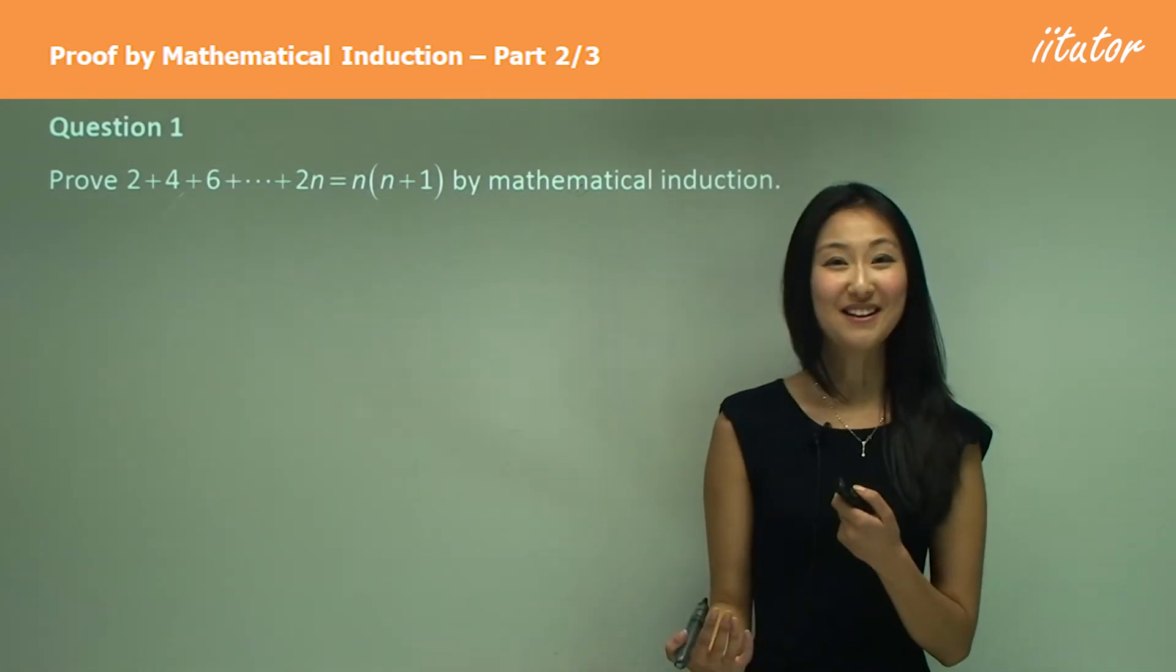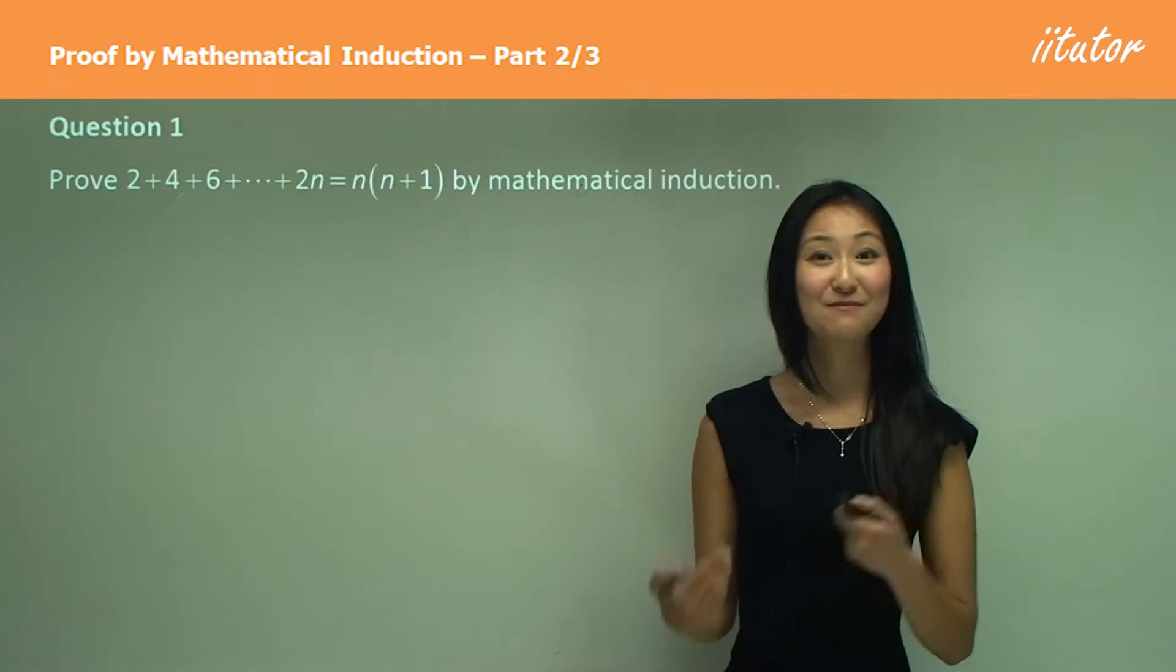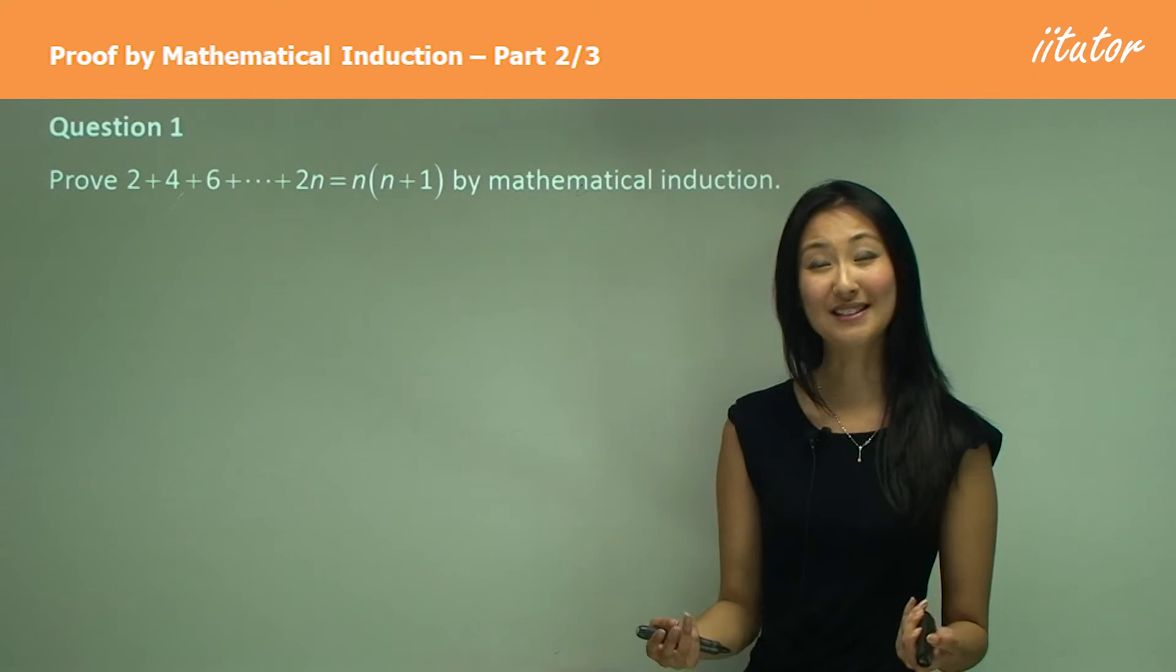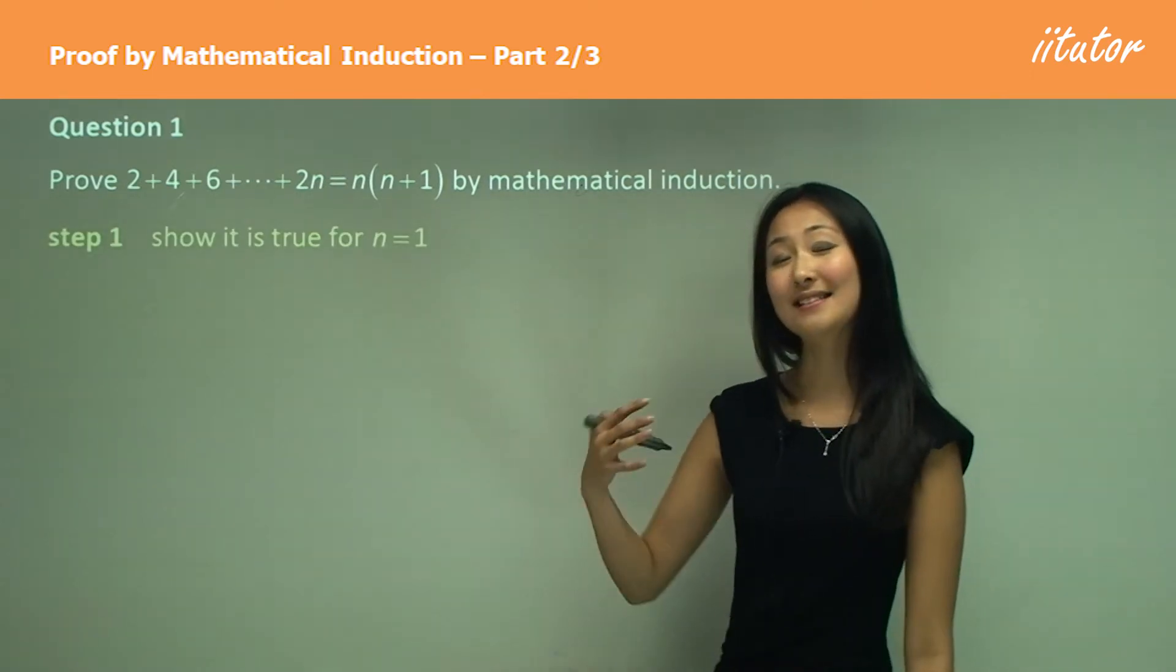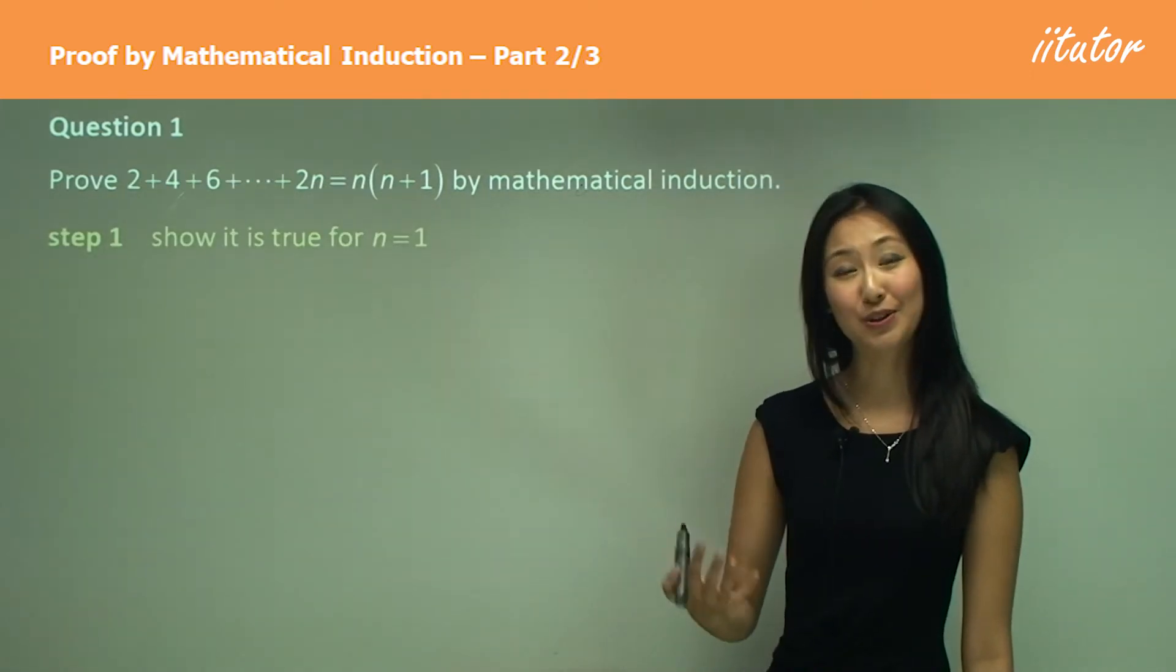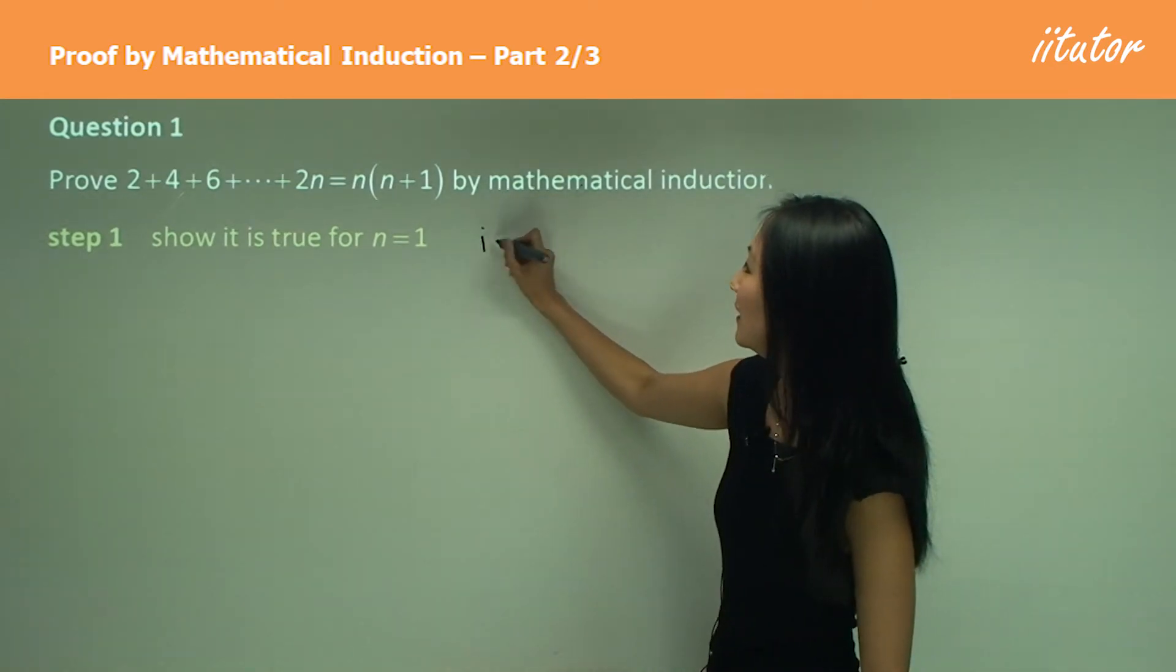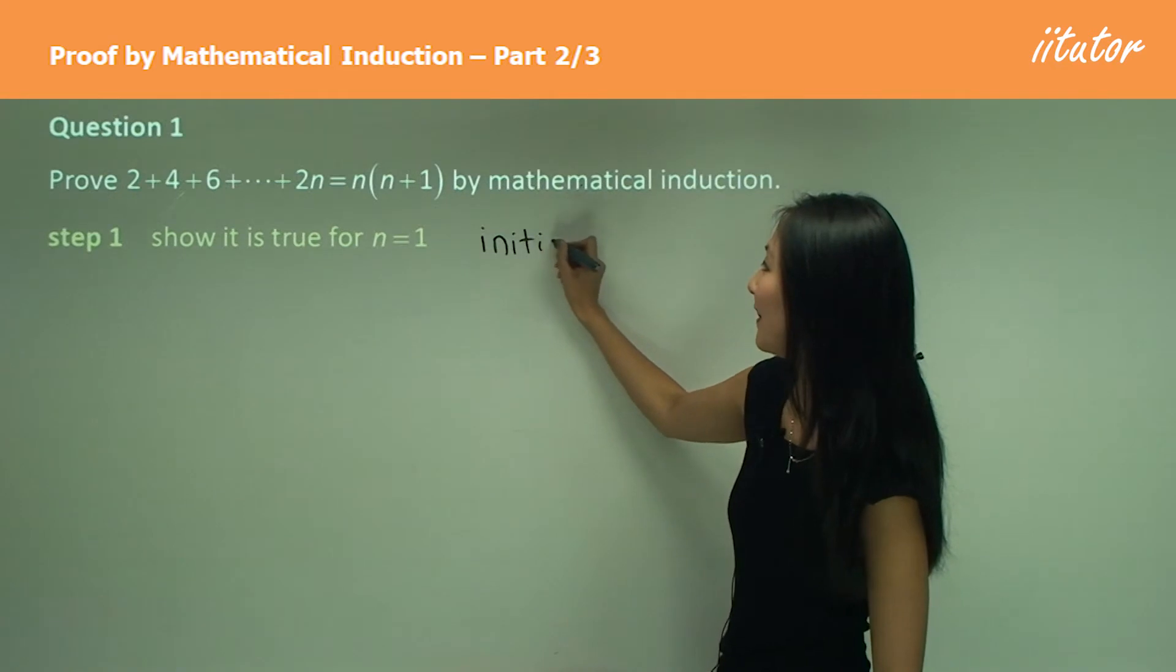Now remember, to start off with proving, what do we need? We always need that first push or the ignition process, which is step 1. In step 1 we show that it's true for the initial value of n.